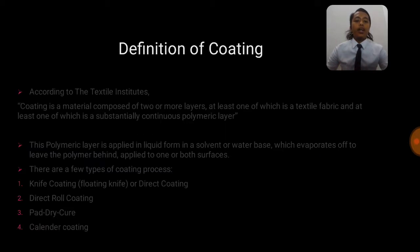We go through to the next subtopic which is the coating processes. According to the textile institute, coating is a material composed of two or more layers, at least one of which is a textile fabric and at least one of which is substantially continuous polymeric layer. This polymeric layer is applied in a liquid form in solvent or water basis which evaporates off to leave the polymer behind, applied to one or both surfaces.